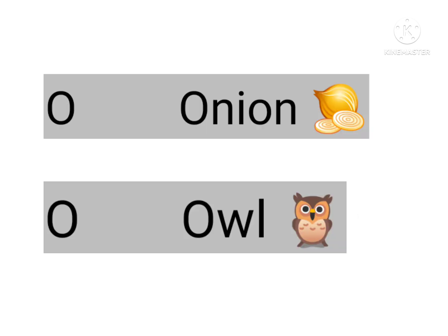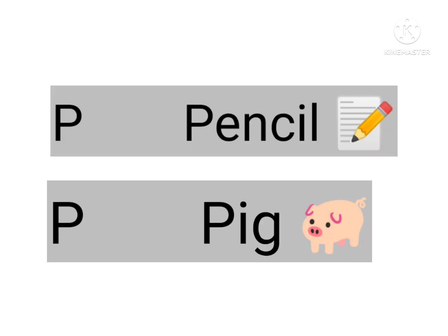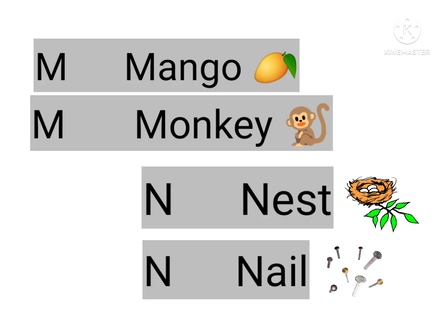O for onion, O for owl. P for pencil, P for pig. Now let's summarize.